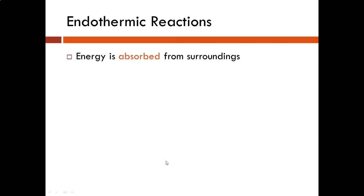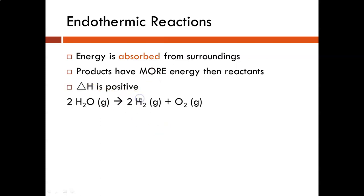In an endothermic reaction, energy is absorbed from the surroundings. So it goes from the surroundings into the system. The products therefore have more energy than the reactants. The delta H is then positive.